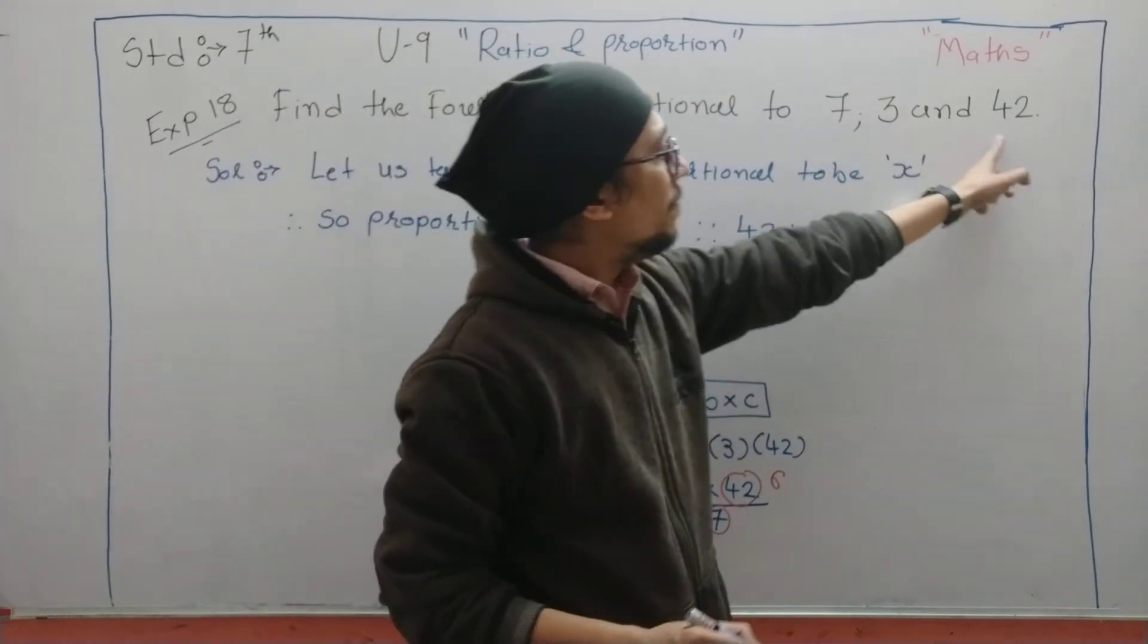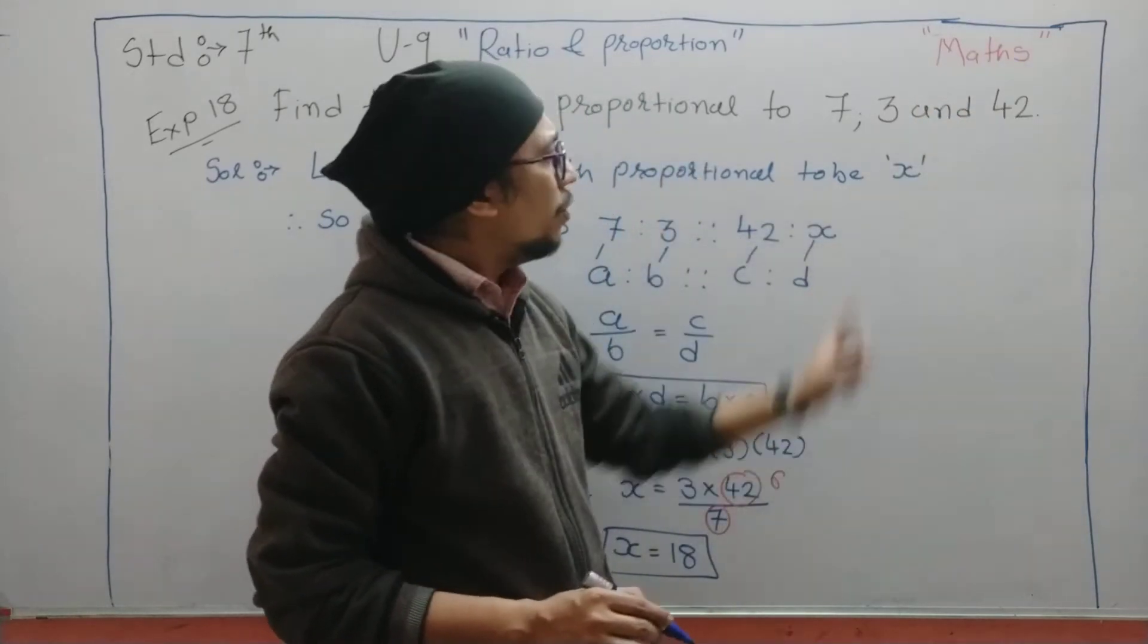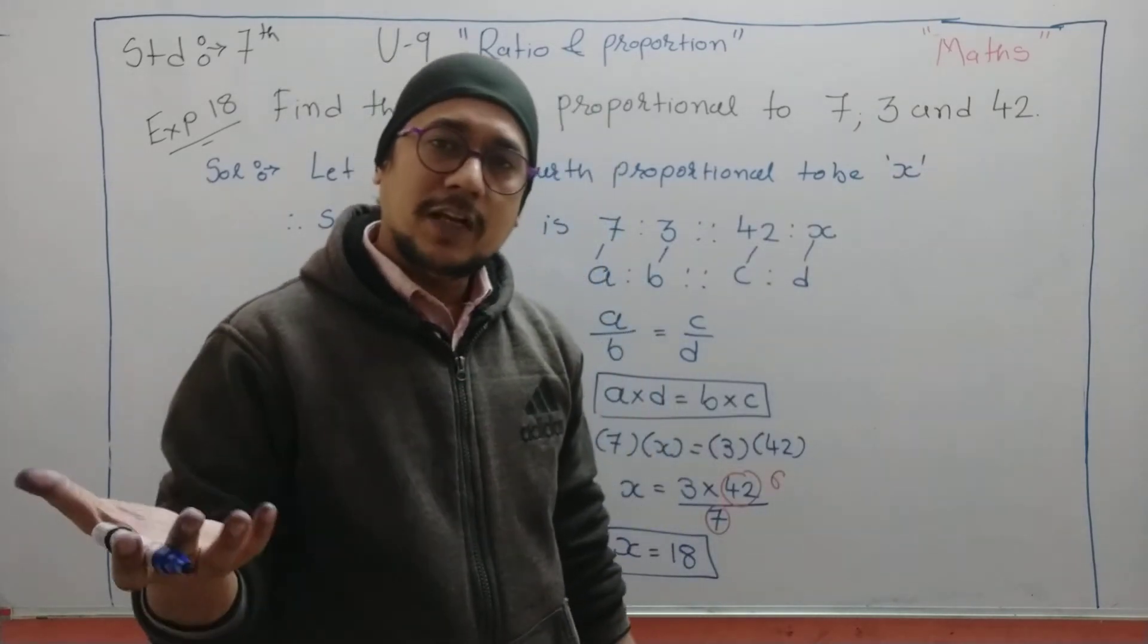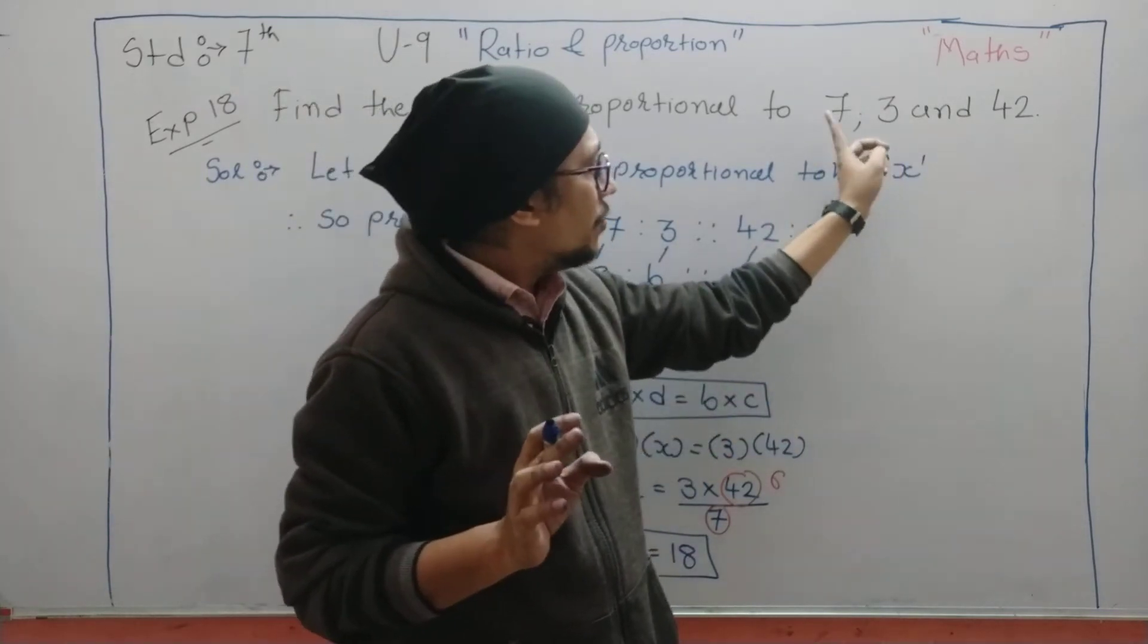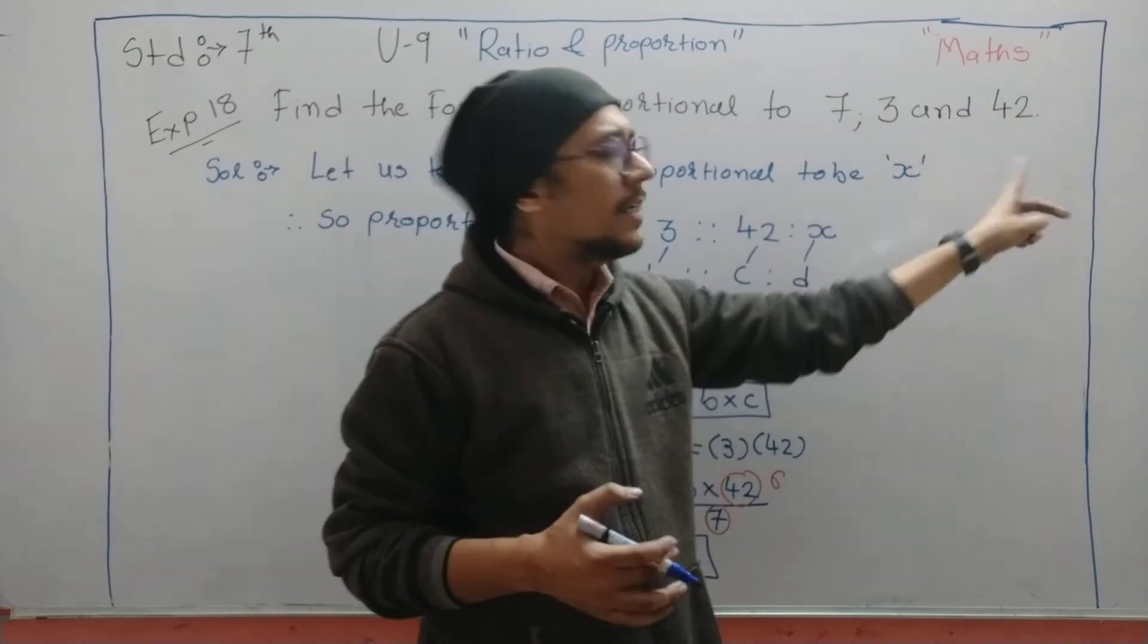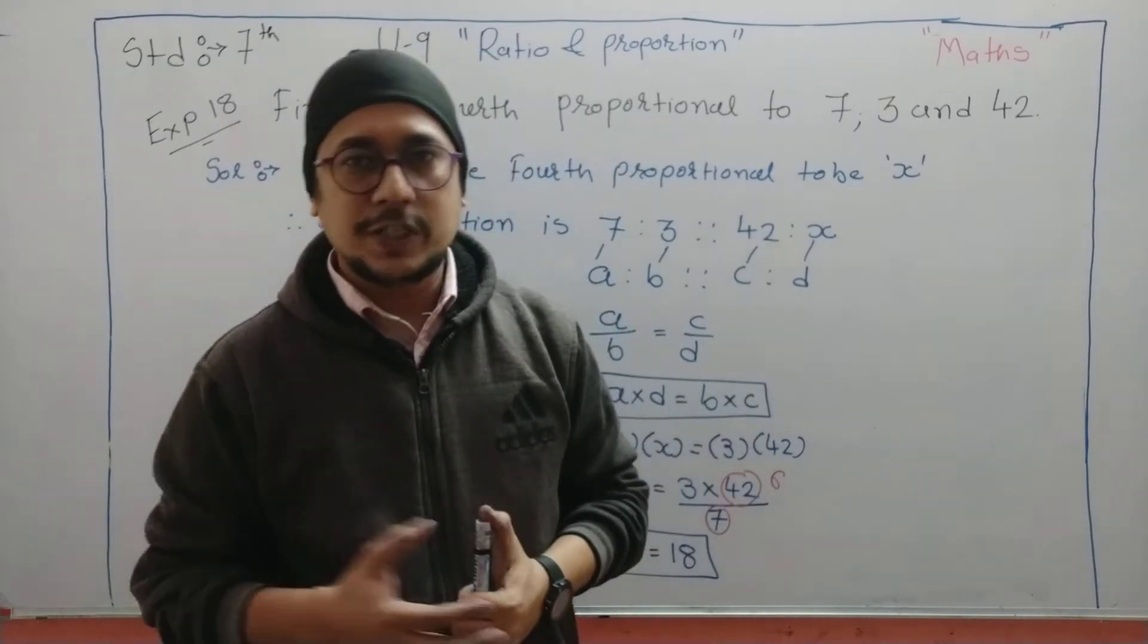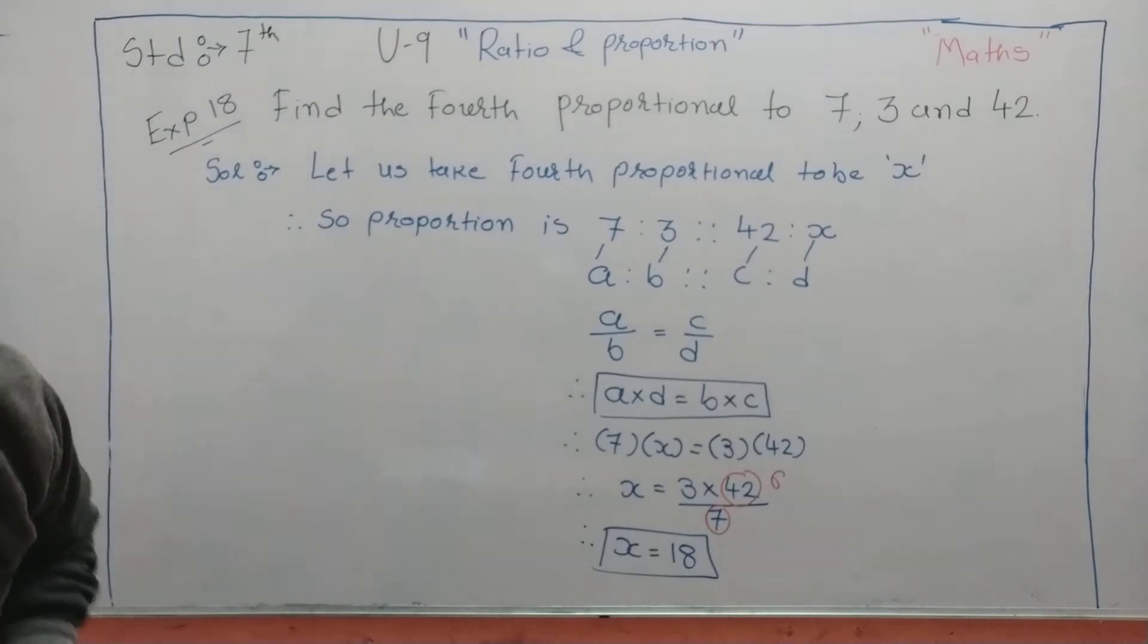So here we have 7, 3, 42, and then it will come as 18. You might think the number is getting bigger here, but it can be a bigger value also, it can be a smaller value also. It all depends on the first ratio. If the first is bigger and second is smaller, then second ratio will also be like that. If seven books' cost is 42 rupees, then 3 more notebooks' cost will obviously be less. That is what proportion is. So pause the video and write this solution. You'll see similar problems for homework.